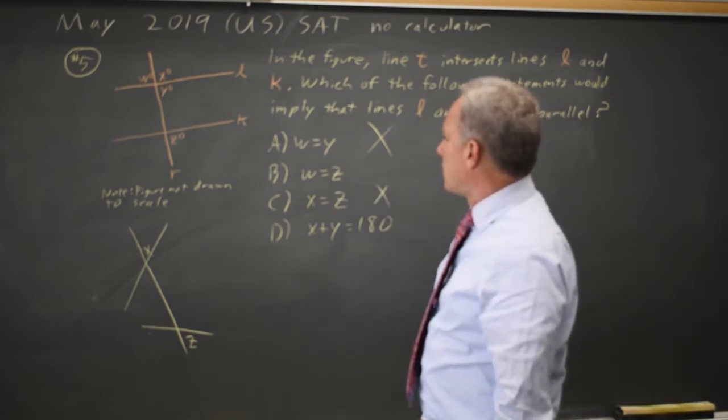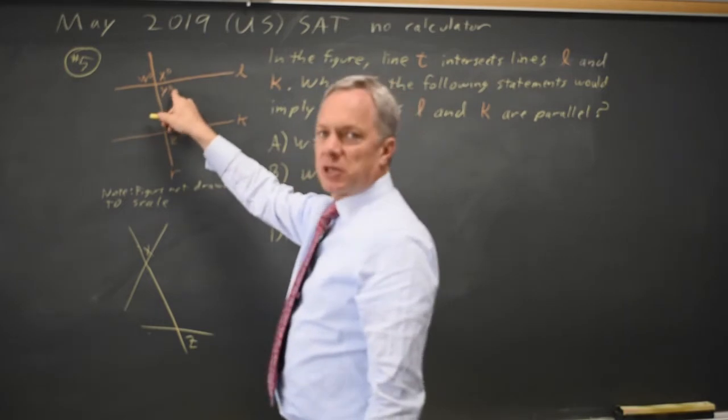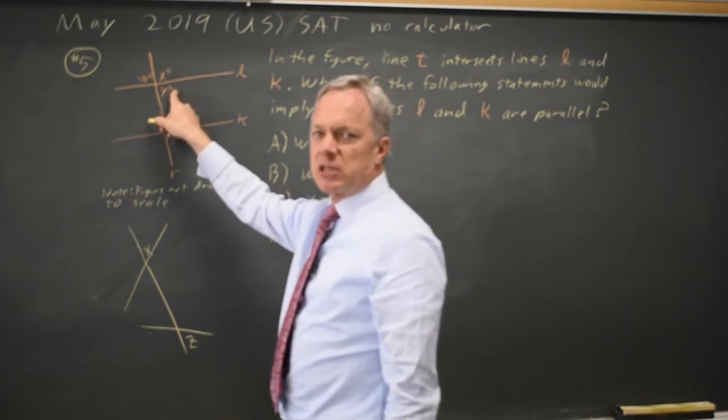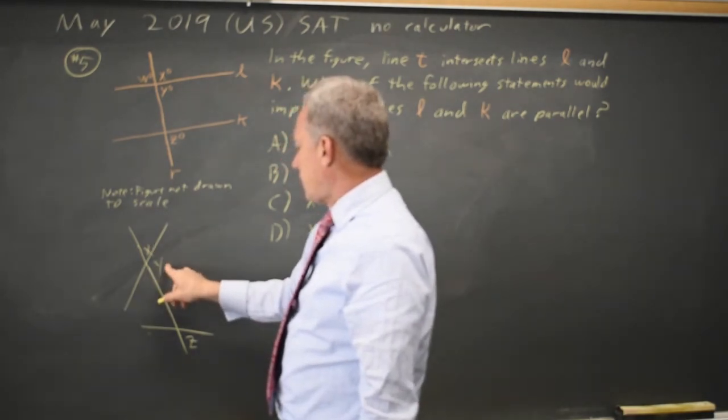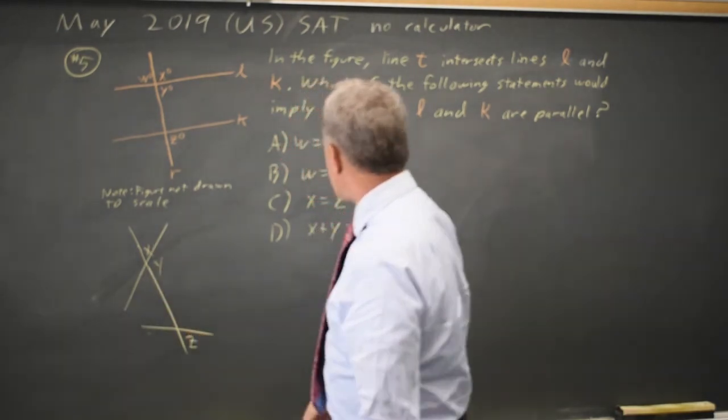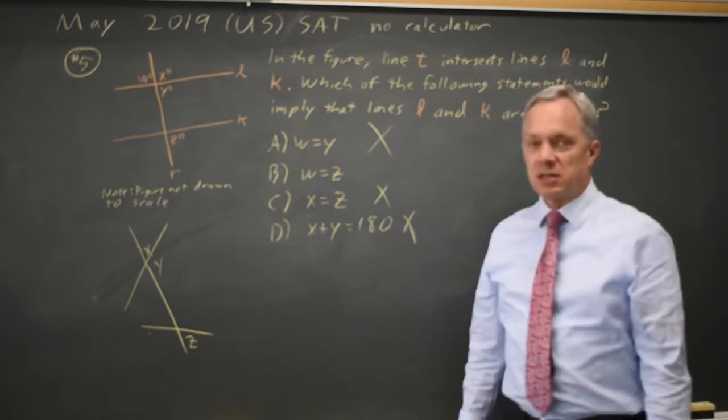In choice D, X plus Y equals 180, but X and Y are supplementary angles, so the sum is always 180. In this case, X and Y also add up to 180, but that doesn't mean that these are parallel, so choice D is not sufficient.